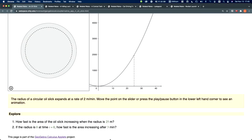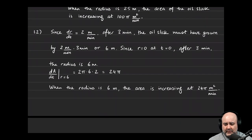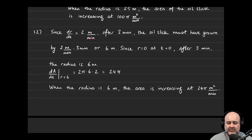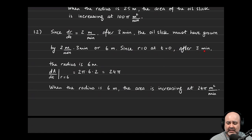Looking at part 2: if the radius is 0 at time t equals 0, how fast is the area increasing after 3 minutes? We're given that dr/dt is 2 meters per minute. This means for every minute that passes, the radius increases by 2 meters. So after 3 minutes, 6 meters have been added. Since the radius started at 0, after 3 minutes the radius is exactly 6 meters.